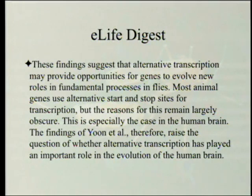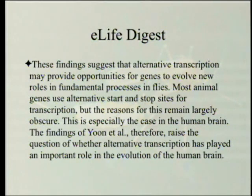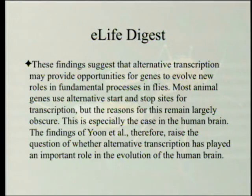These findings suggest that alternative transcription may provide opportunities for genes to evolve new roles in fundamental processes in flies. Most animal genes use alternative start and stop sites for transcription, but the reasons for this remain largely obscure. This is especially the case in the human brain — there is a protein in the brain which is only partly transcribed, makes the brain bigger and presumably smarter. The reason why we're not apes is partly because of that particular gene.